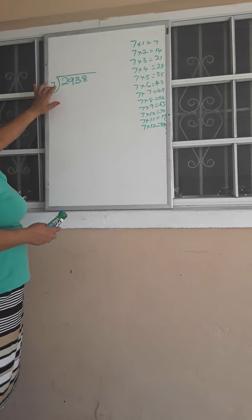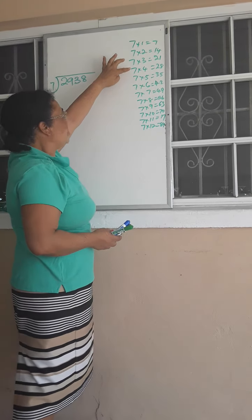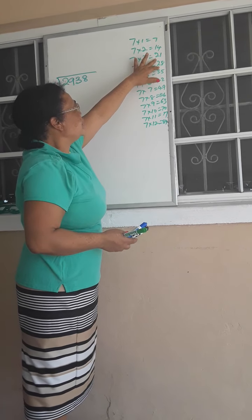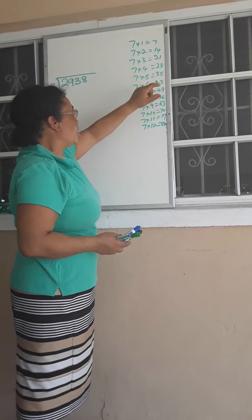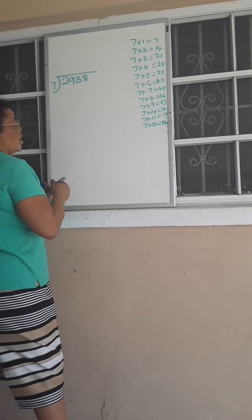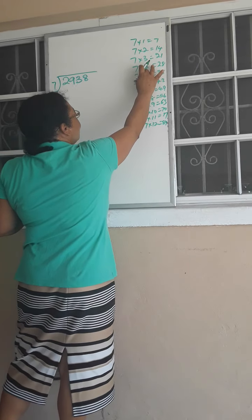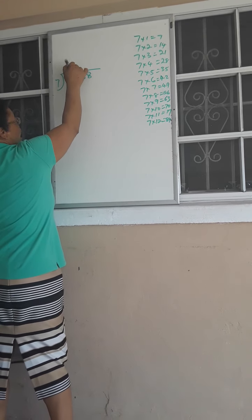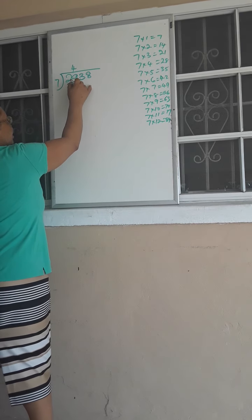So let's go. I go 7 into 29. I go to my 7 times table, and I notice that the closest I'm going to come here is 28. I can't go to 7 times 5 because I'll end up with 35. So 7 into 29, I'm going to get 4 times. I'll write that 4. What is 7 times 4? That is 28.